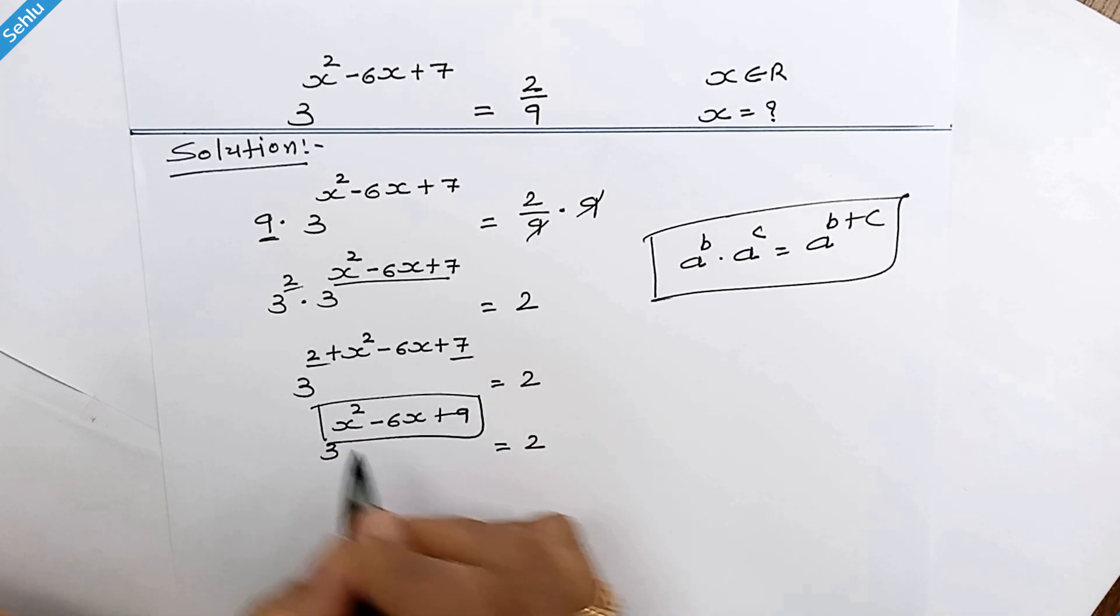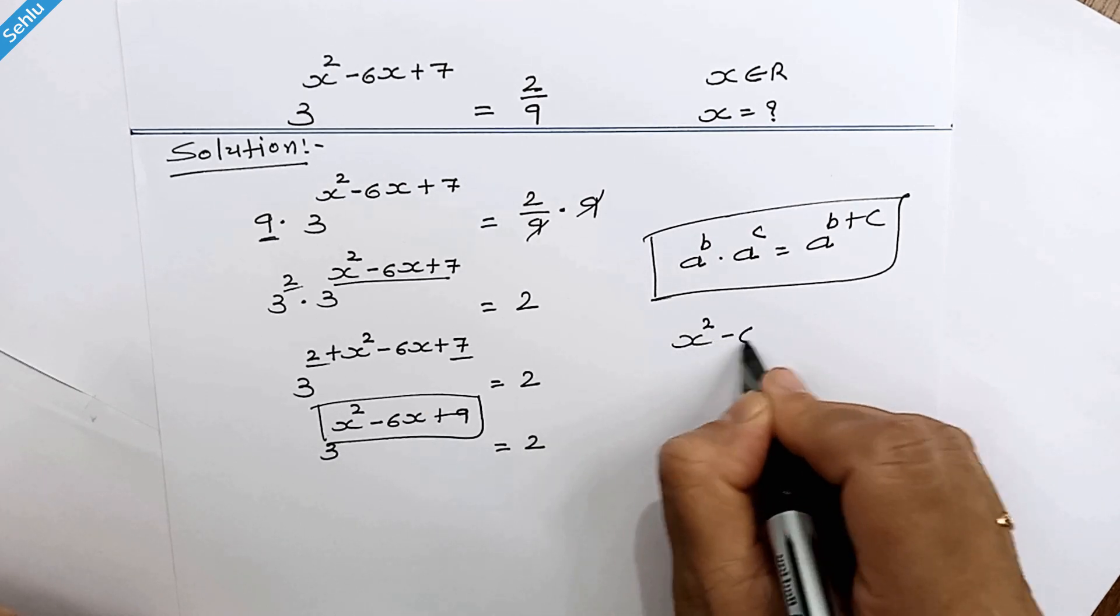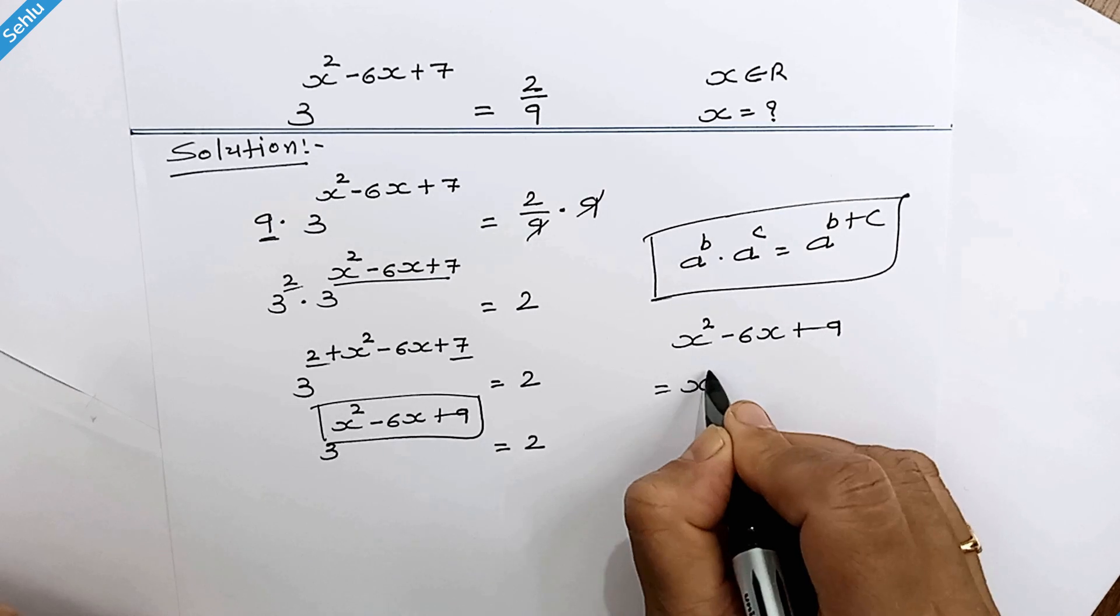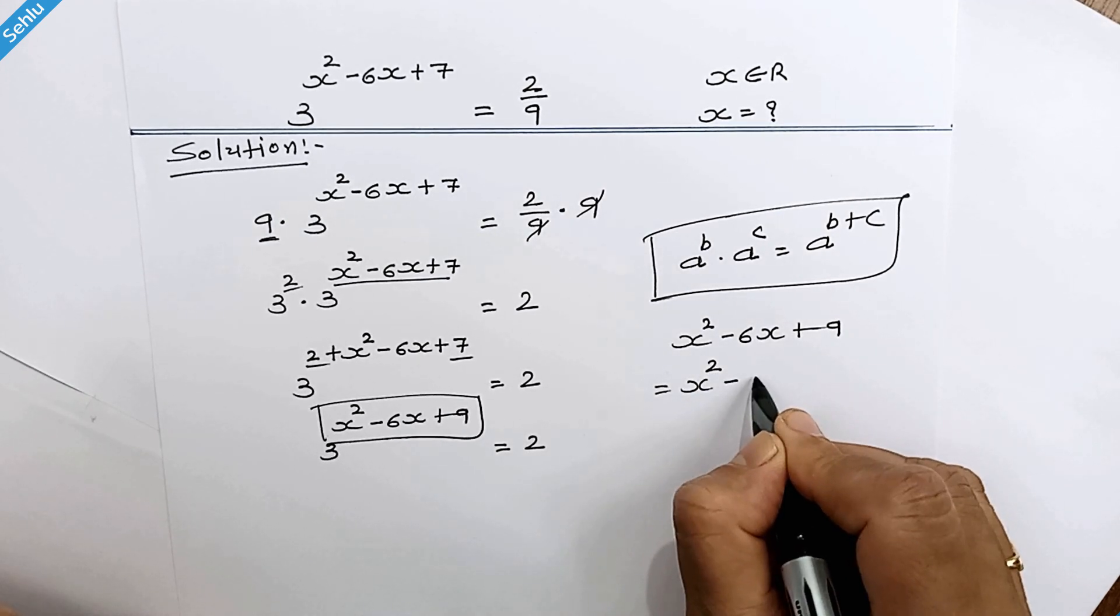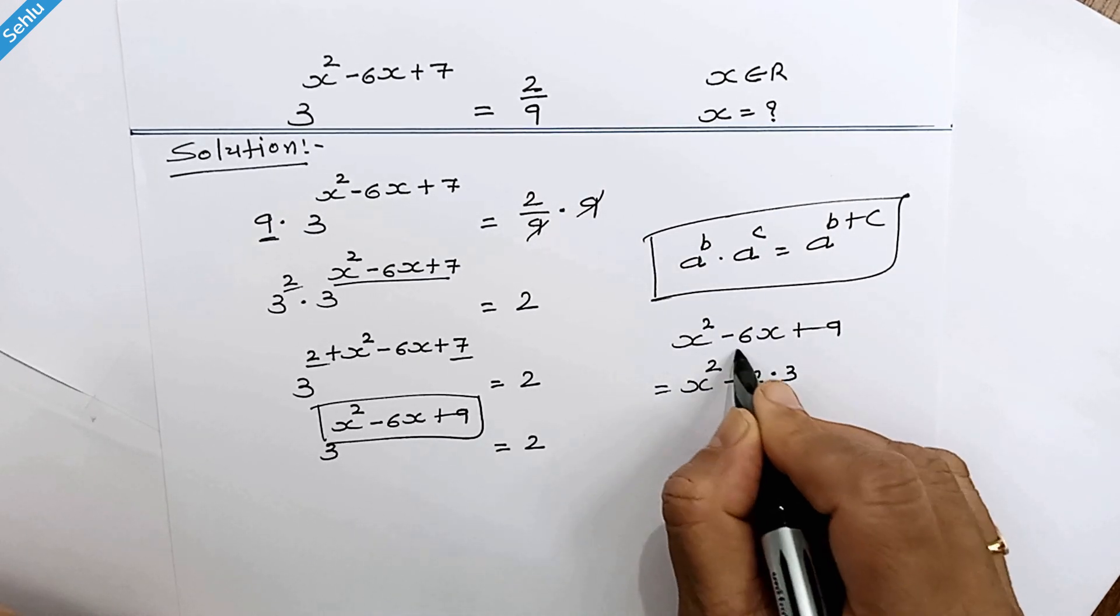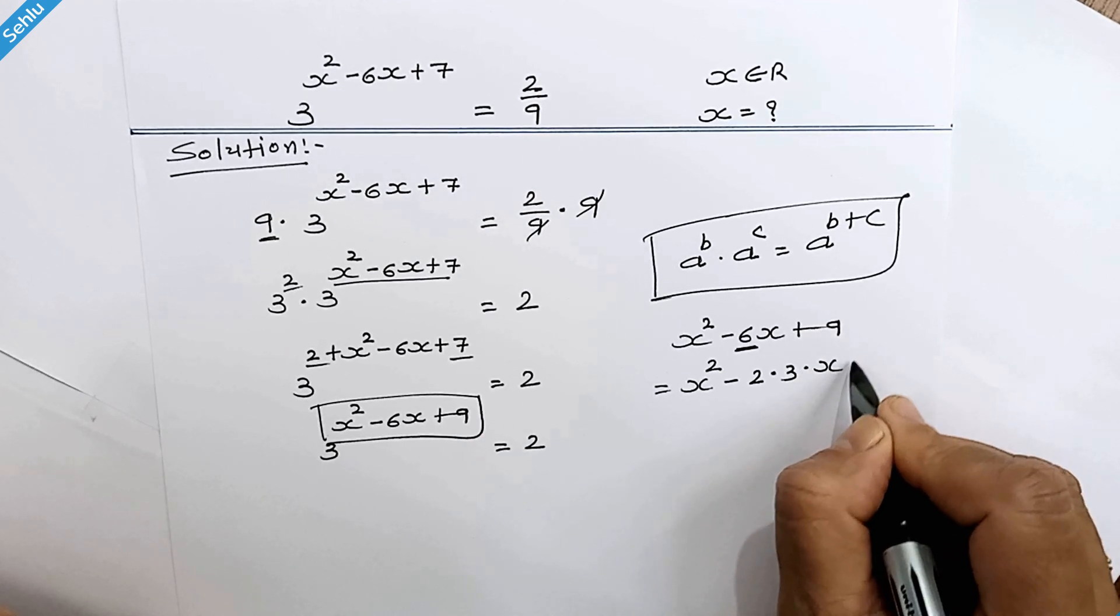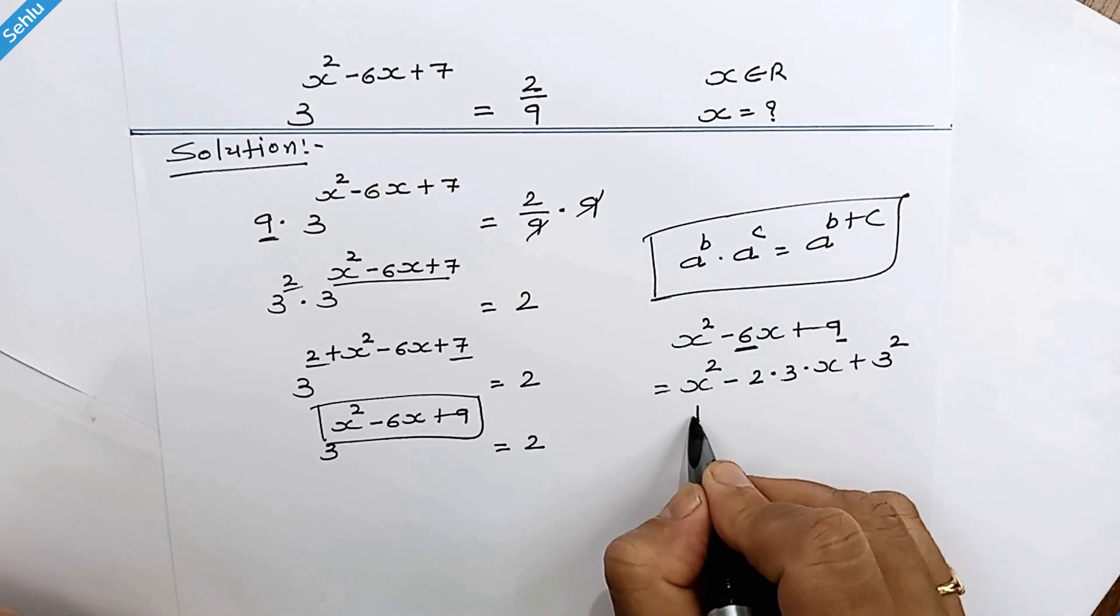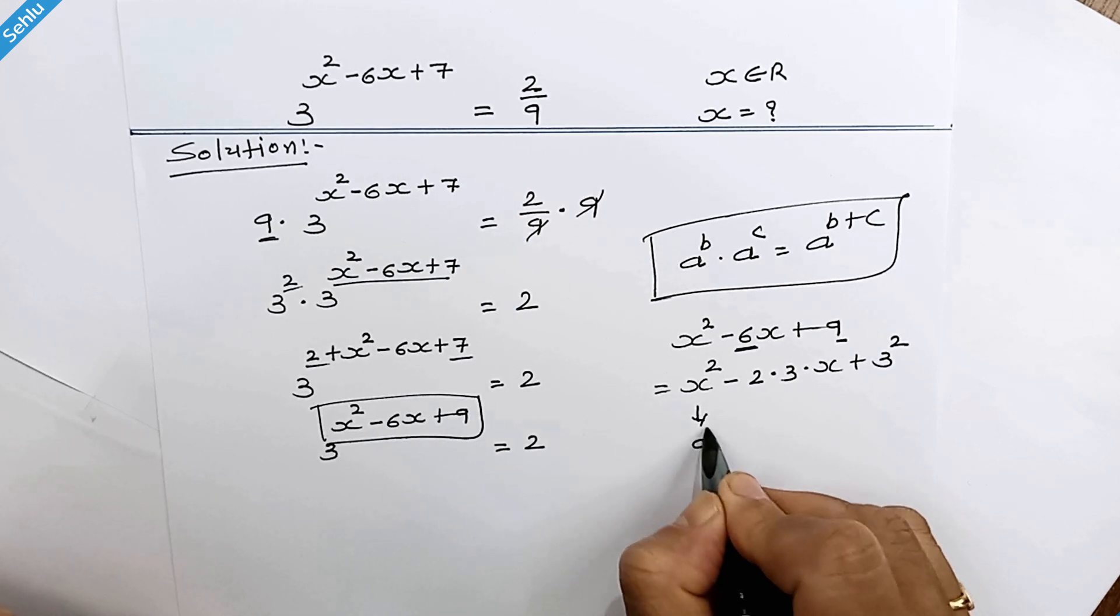Now let's focus on this: x² - 6x + 9. So it will be x² minus 2 times 3 is 6, and 9 is 3². If we compare, x² is a², 3² is b².